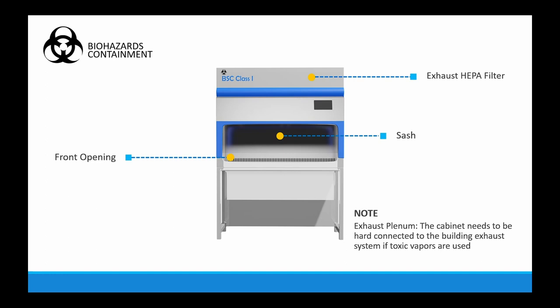This is a brief diagram of a class one biosafety cabinet. We have a front opening, an adjustable and movable sash, and an exhaust HEPA filter at the top. There is also an exhaust plenum. The cabinet needs to be hard connected to the building exhaust system if toxic vapors are used, which will be discussed in coming slides.